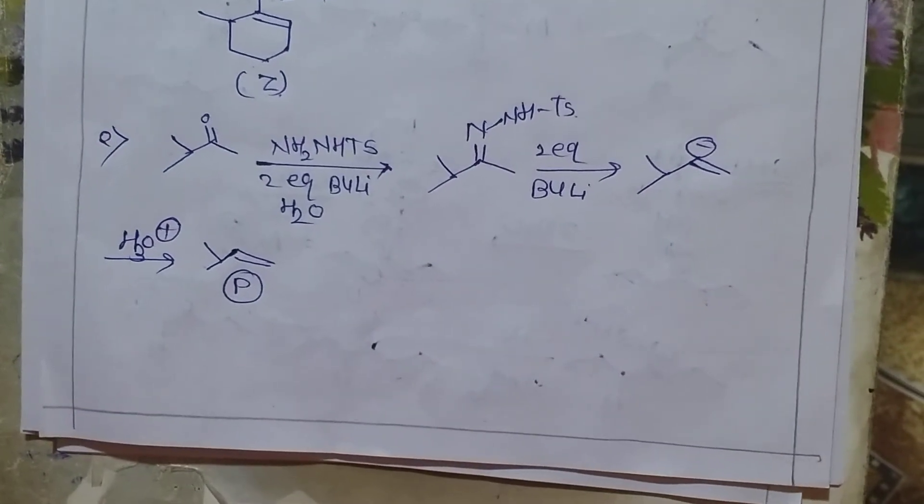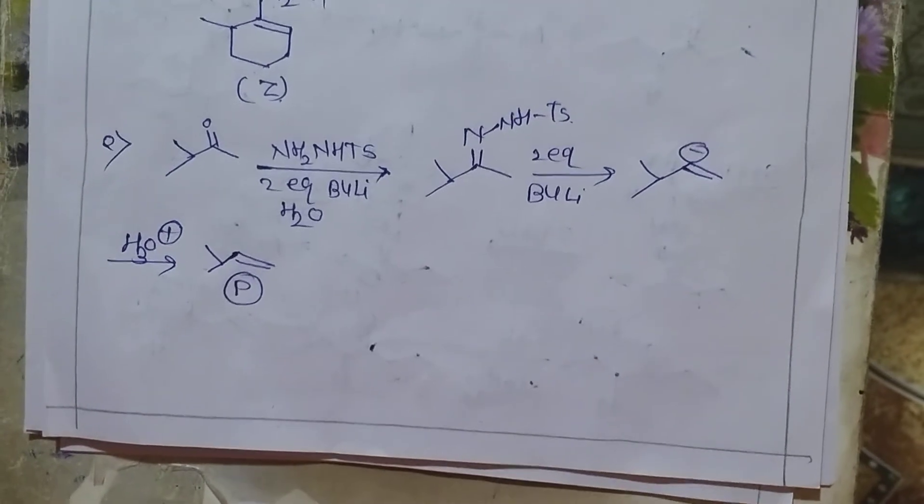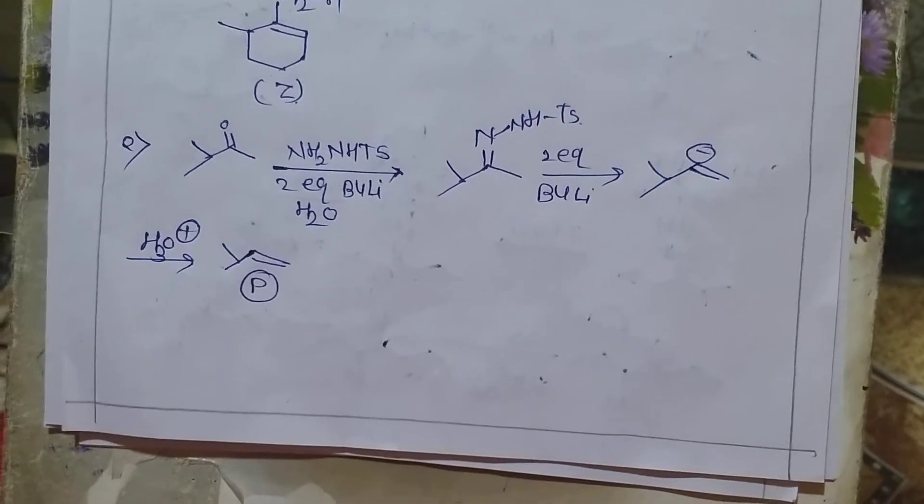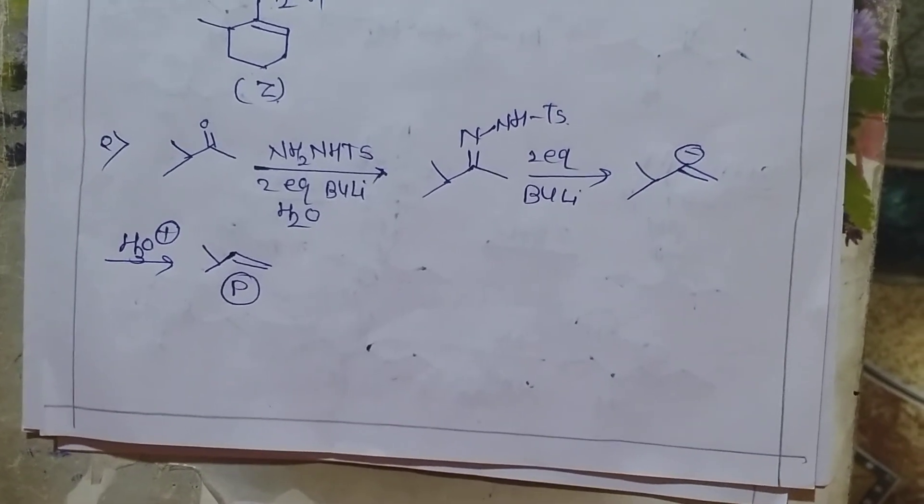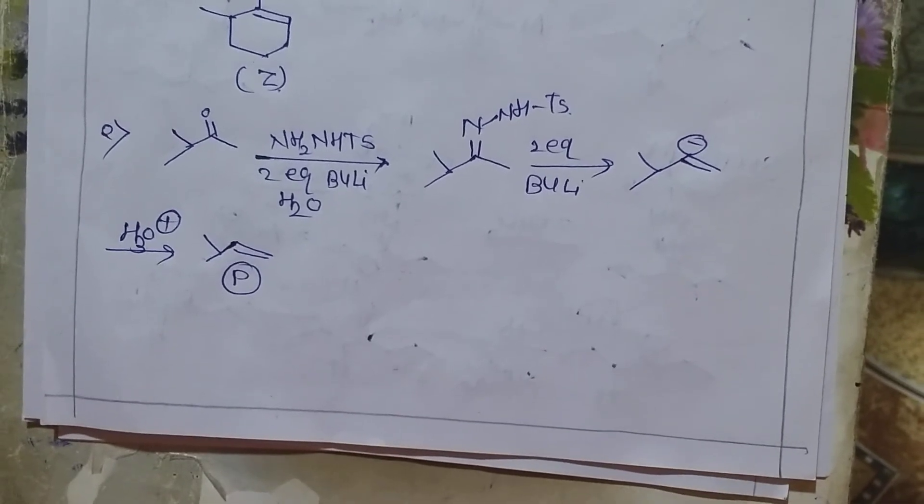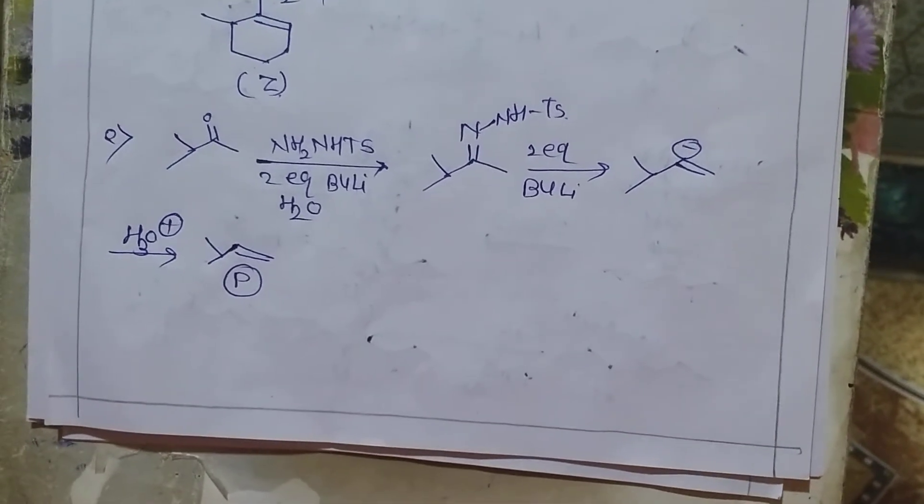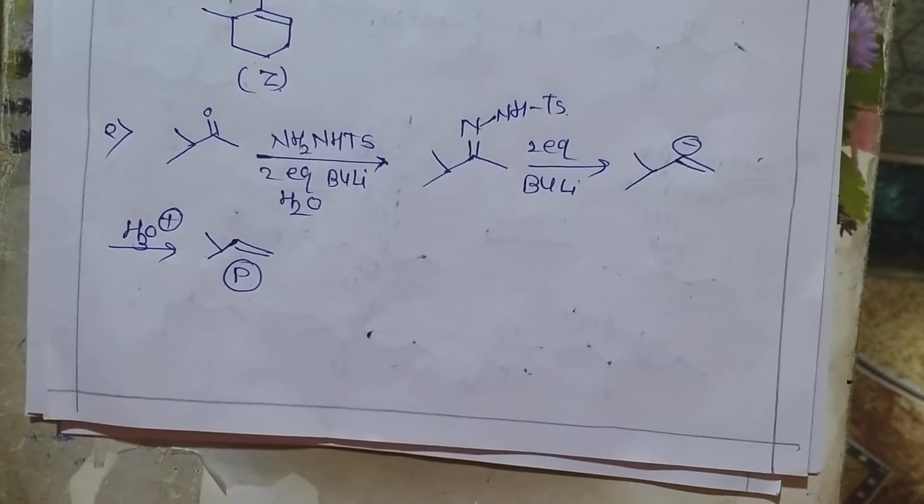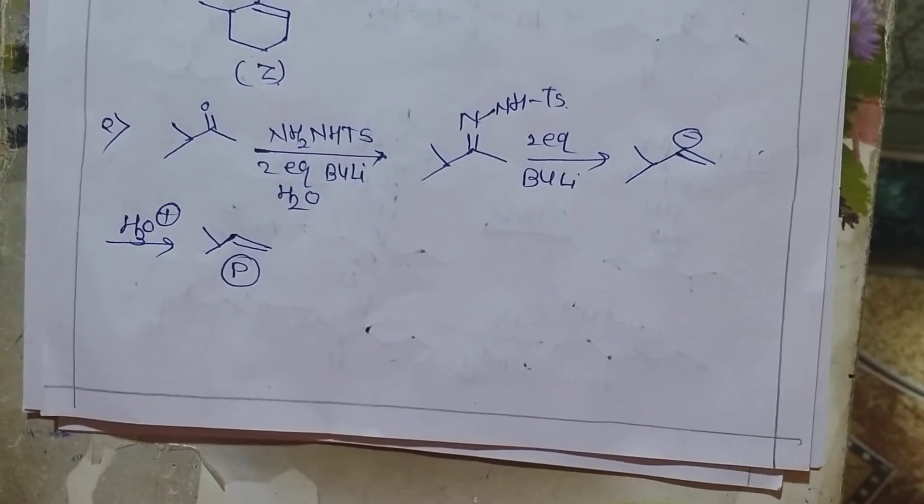Let us consider another example of Shapiro reaction. This is one of ketone. It will react with NH2-NHTS followed by two equivalents of butyllithium followed by hydrolysis. It will give less substituted alkene.